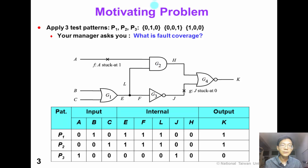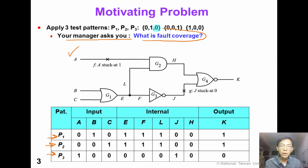Here is a motivating problem. Suppose we design this circuit and we decide to apply three patterns — 0 1 0, 0 0 1, and 1 0 0 — to this circuit, and your manager asks you what the fault coverage of your test set. How are you going to answer this question?